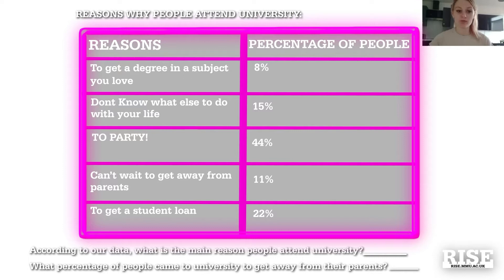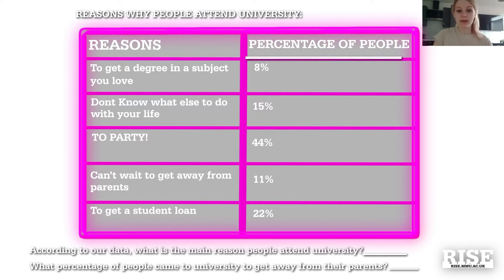We've been given a table with the reasons why people attend university. The reasons, or variables, are given on the left-hand side of the table underneath the title 'Reasons,' and the percentage of people is given on the right-hand side.